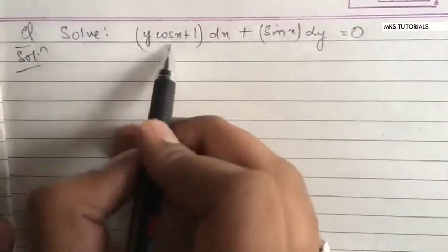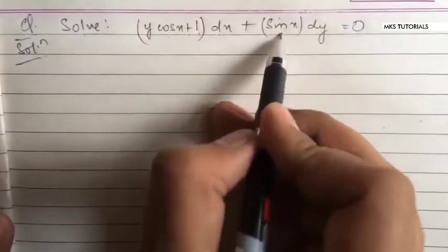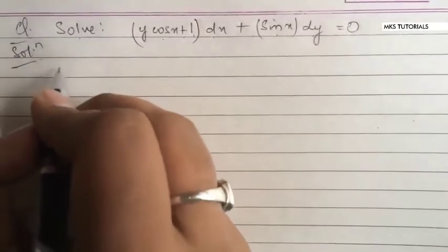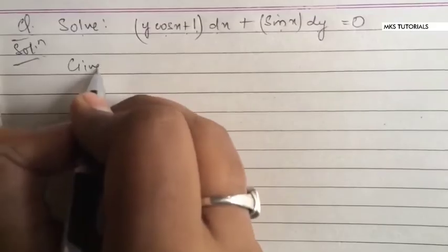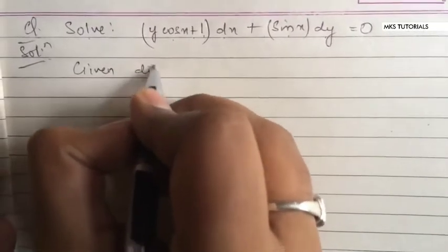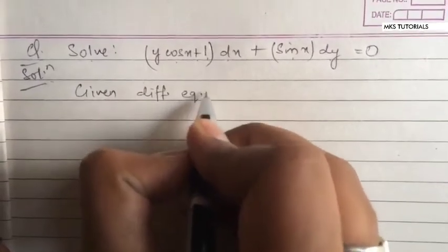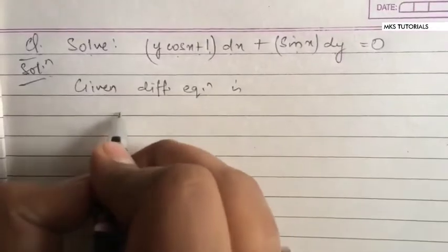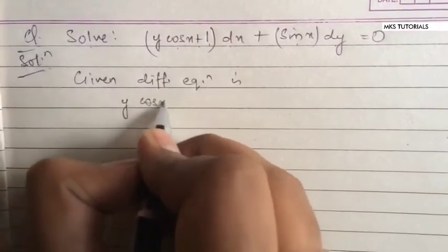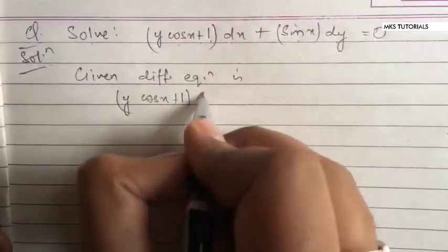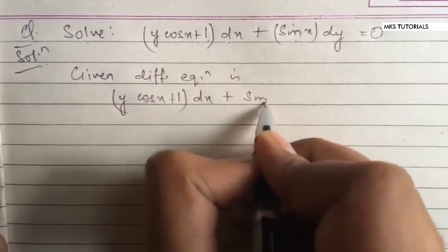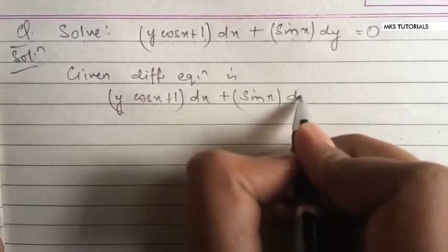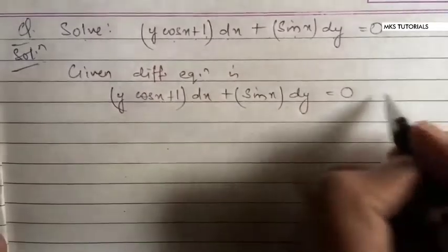The next question is: solve y cos x plus 1 into dx plus sin x into dy equals 0. The given differential equation is y cos x plus 1 dx plus sin x into dy equals 0.